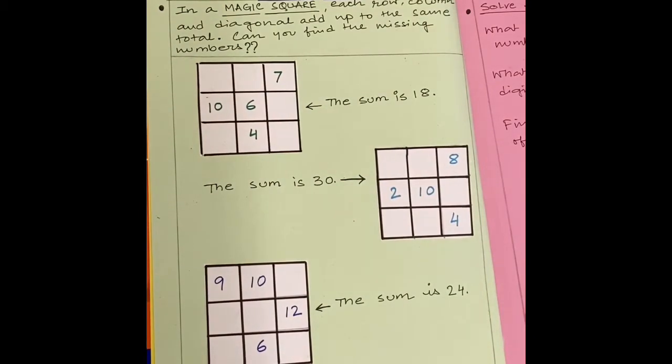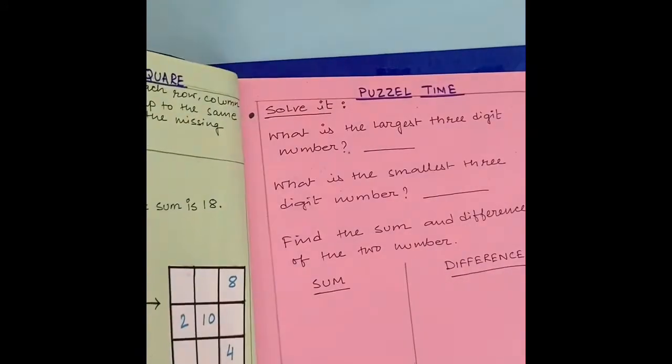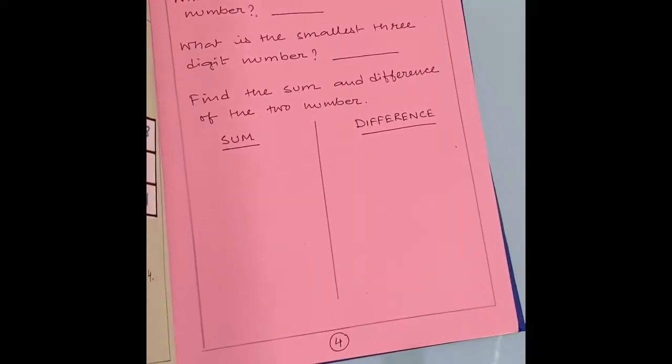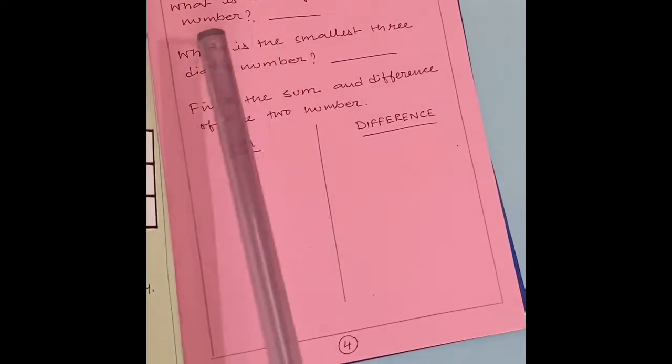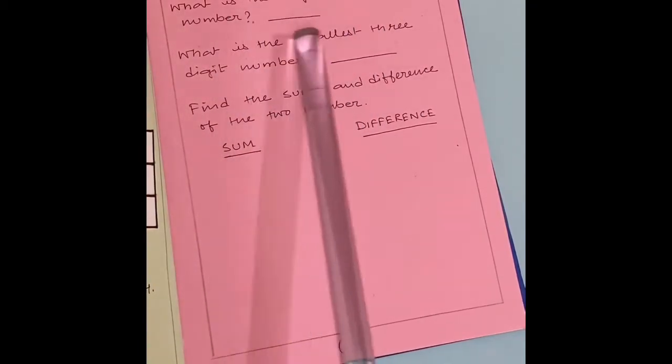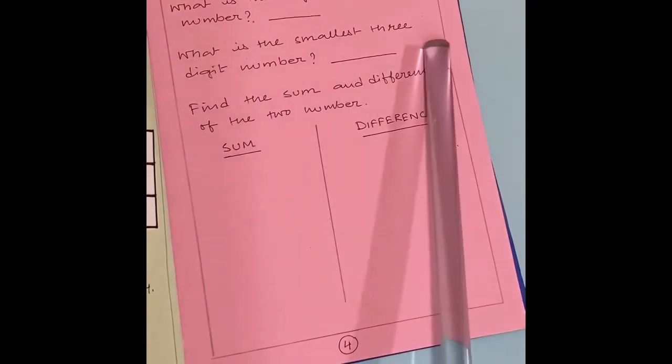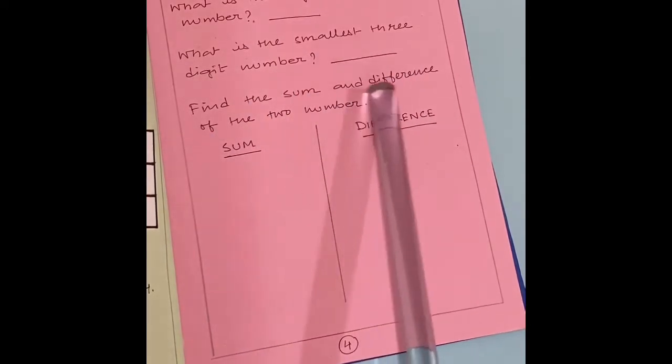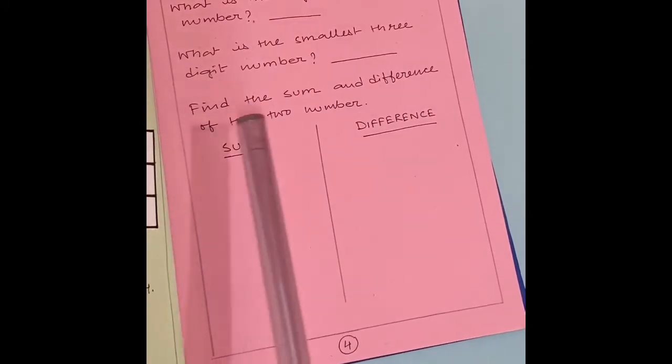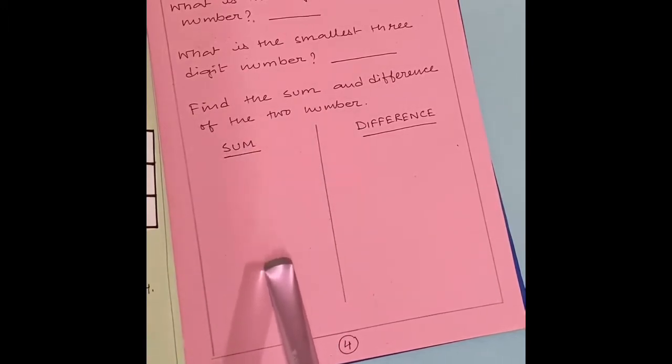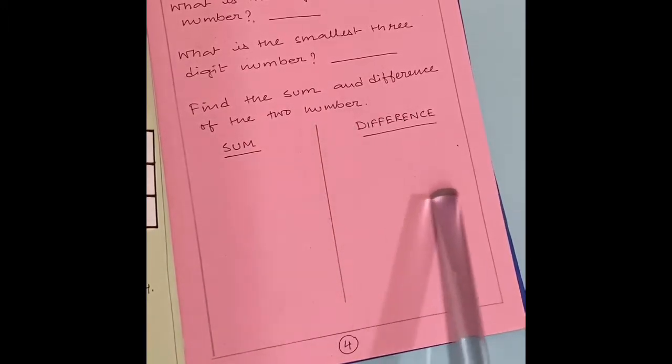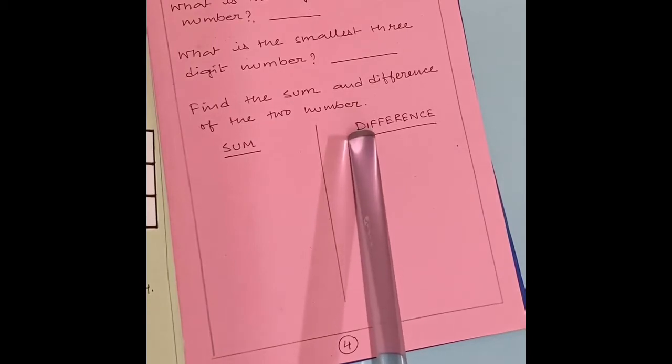Now, come to the next page. That is puzzle time. Page number 4. Here, solve it. What is the largest 3-digit number? You have to write the largest 3-digit number here. What is the smallest 3-digit number? You have to write the smallest 3-digit number here. Now, find the sum and difference of the two numbers. Here, you have to find the sum. That is, you have to do addition. And here, you have to find the differences. That is, subtraction.